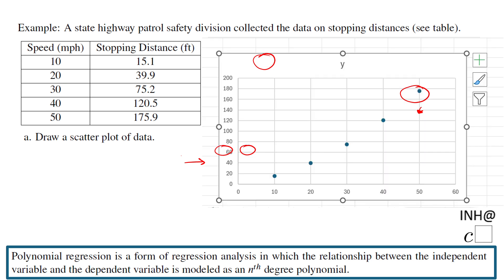Pretty simple in my opinion to get this scatterplot which you see here. Let me erase the ink on the slide. This is the scatterplot using Excel spreadsheet. Every single point here - this is 10 and 15.1, and this is 20 and 39.9...